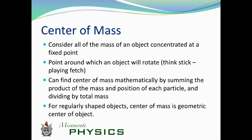If you want to find it, if you take a stick and you throw it, you'll see that the stick itself is going to rotate around the center of mass. When you want to find it mathematically, you sum up the product of the mass and the position of each particle and then divide by its total mass.